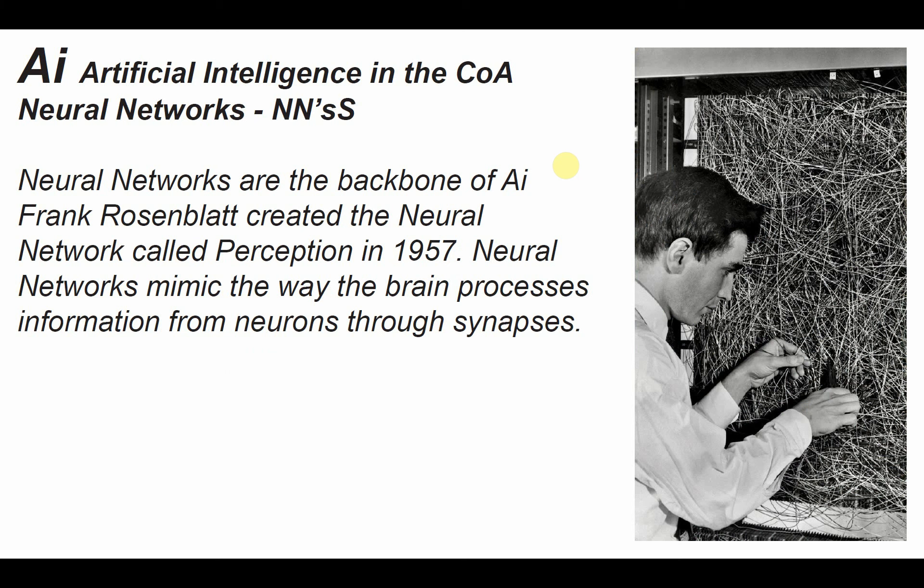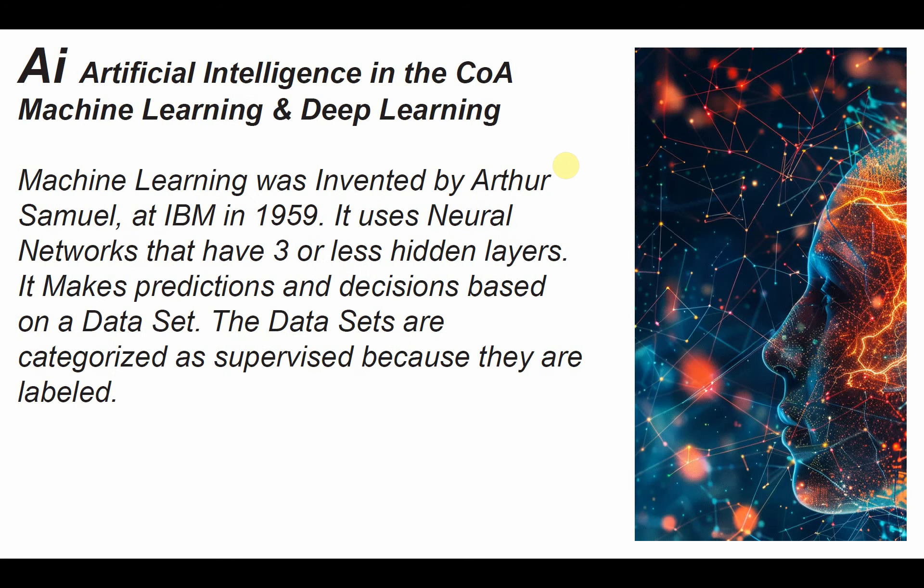Let's spend some time getting familiar with what AI is made of. We'll start with neural networks — we'll call them NNs. NNs are designed to function like the human brain, with neurons sending information through synapses. In 1957, Frank Rosenblatt created the NN named Perceptron. There are two subcategories of AI: machine learning and deep learning. Machine learning uses NNs that are trained on labeled and tagged data — that's called supervised learning — and the NNs have three or fewer hidden layers.